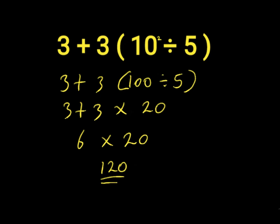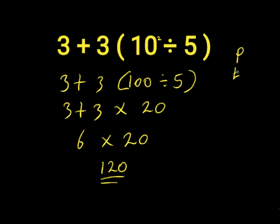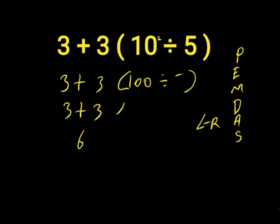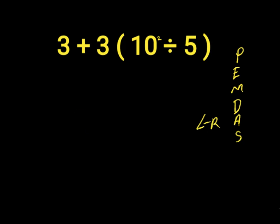120 is wrong because we did not follow the order of operations, which is PEMDAS. In PEMDAS we have: Parentheses, Exponents, Multiplication, Division, Addition, and Subtraction. Multiplication and division are equal priorities, as are addition and subtraction, working from left to right. Following this gives us the correct answer.